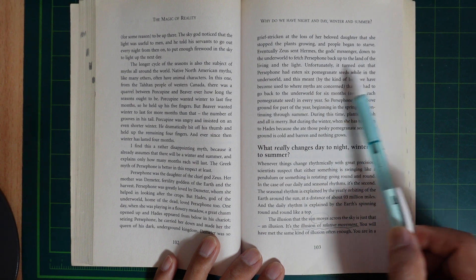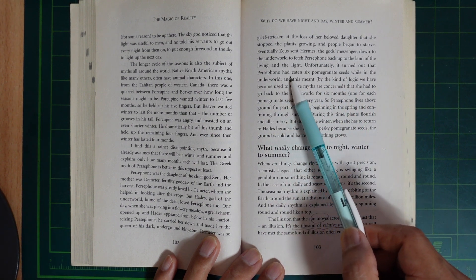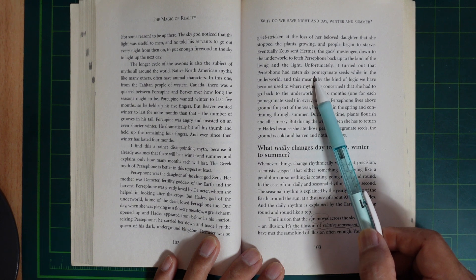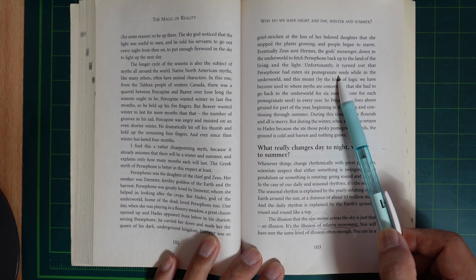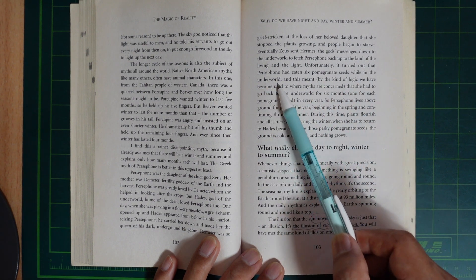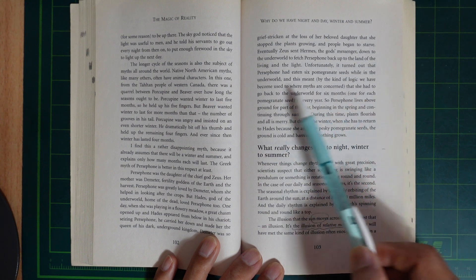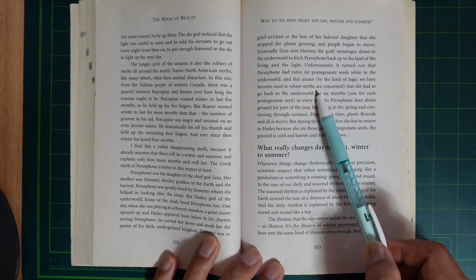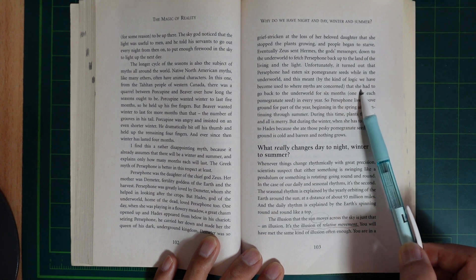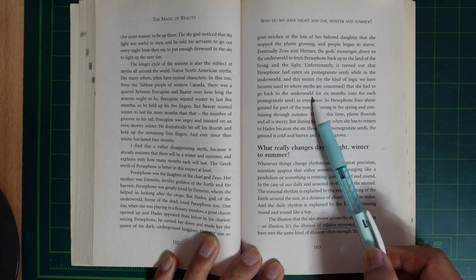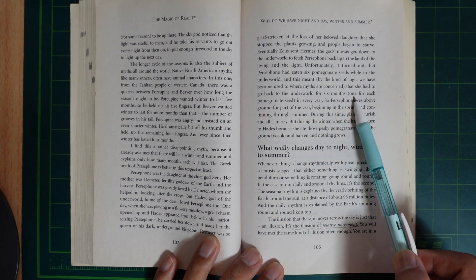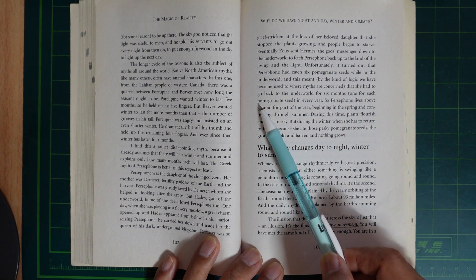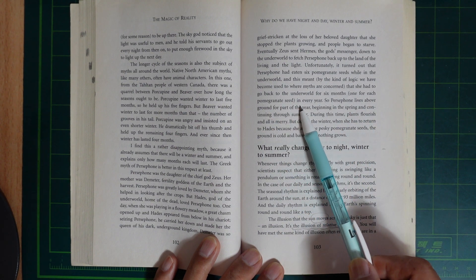Unfortunately, it turned out that Persephone had eaten six pomegranate seeds while in the underworld. And this means, by the kind of logic we have become used to where myths are concerned, that she had to go back to the underworld for six months, one for each pomegranate seed she had eaten.